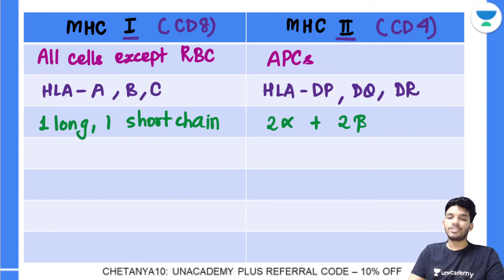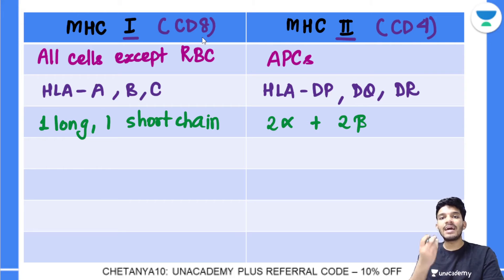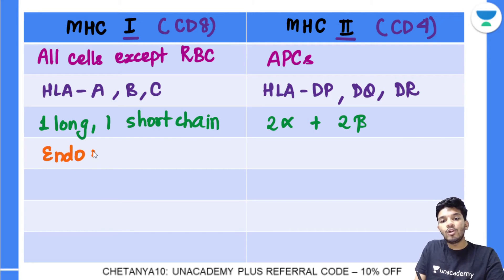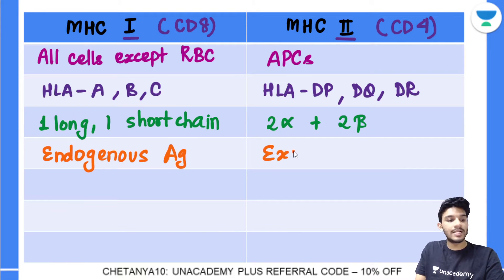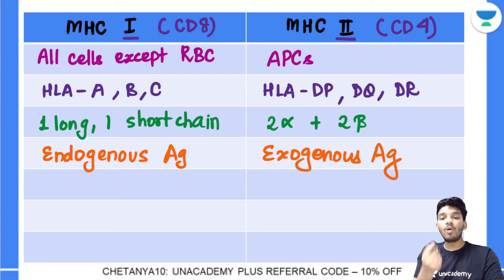MHC1 presents endogenous antigens. Since MHC1 presents to CD8 cells which act against viruses and cancers — and viruses live inside cells — their antigens are inside the cell, hence endogenous. MHC2 presents exogenous antigens, which are present outside the cell and are taken up by phagocytosis.